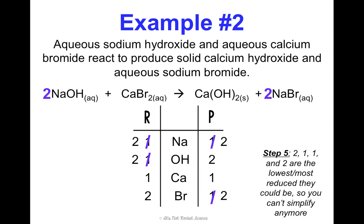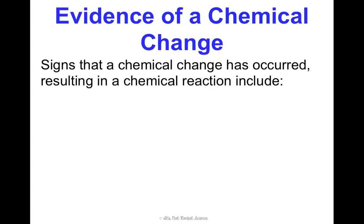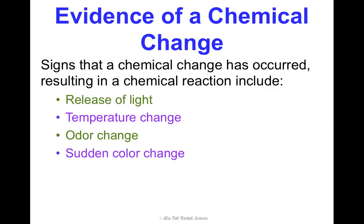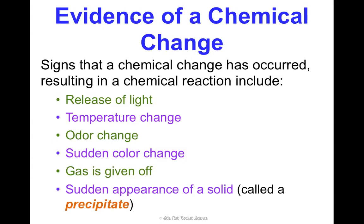Last thing I want to remind you of is something we learned about in our matter unit. And that is the signs that a chemical change and thus a chemical reaction have occurred. Remember, they are a release of light, temperature change, odor change, sudden color change, a gas being given off, and the sudden appearance of a solid, which is called a precipitate.